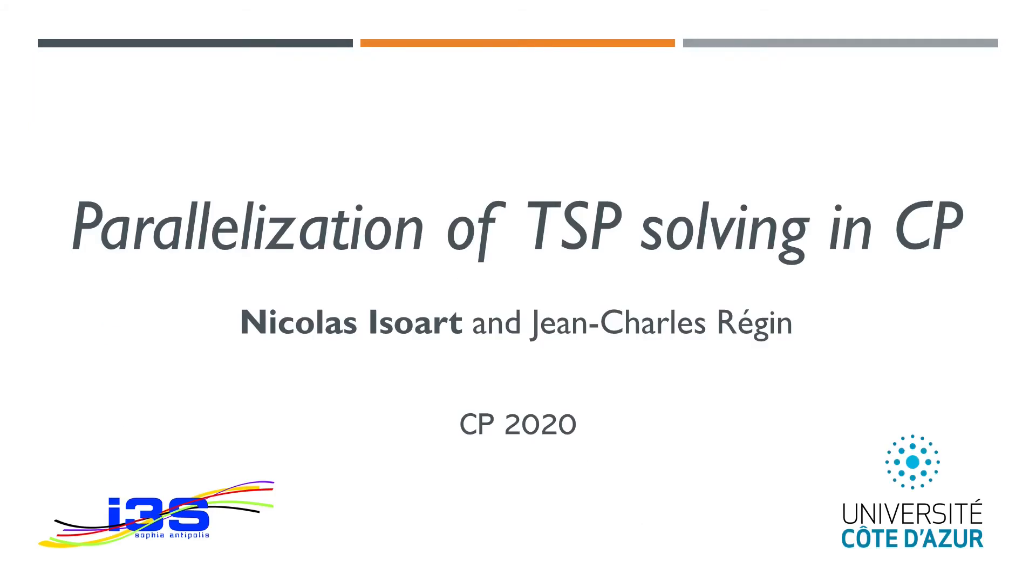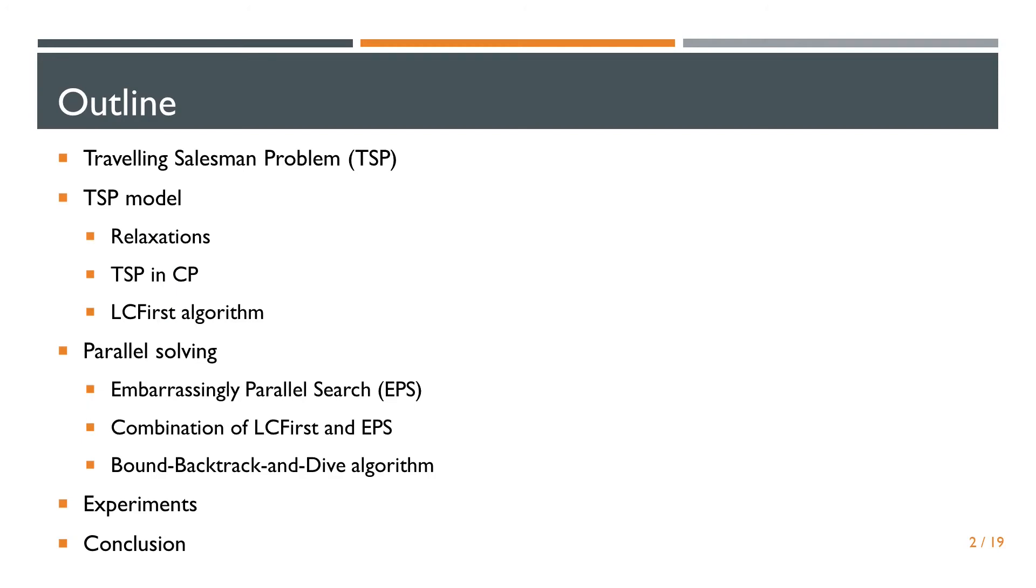I'm Nicolas Isohar and I will talk about the work done with Jean-Charles Régin on the parallelization of the TSP solving in CP. This work was done at the I3S, a French laboratory in the University Côte d'Azur. First, I will define what the Travelling Salesman problem is and how it is modeled in CP. As our goal is to parallelize the solving of the TSP, we propose to use EPS and I will explain how it works. Next, I will show you why the combination of LCFirst and EPS is not straightforward and how to combine them. Finally, I will show you some experiments and I will conclude.